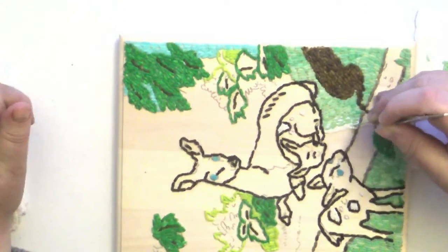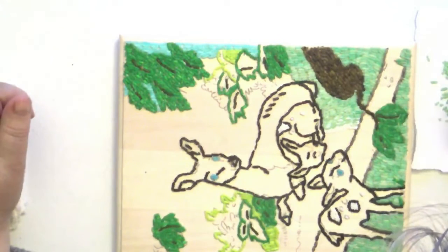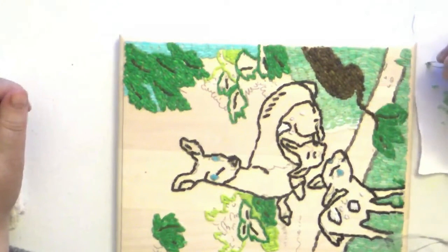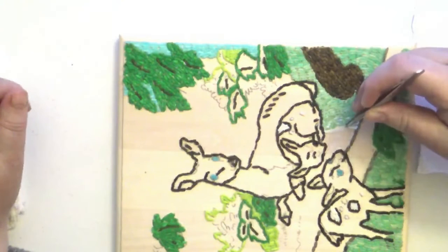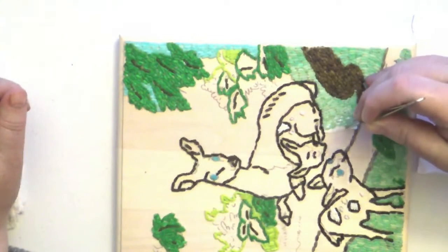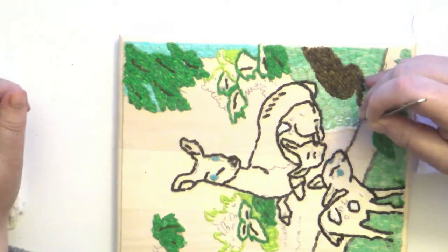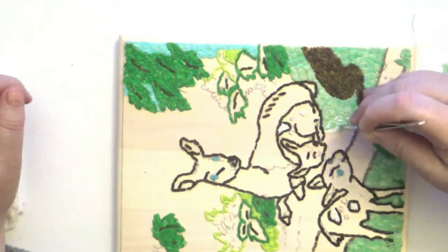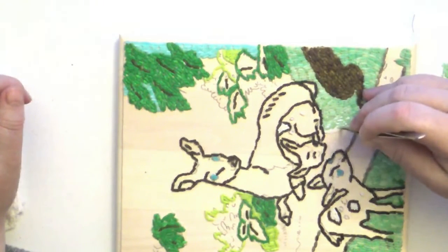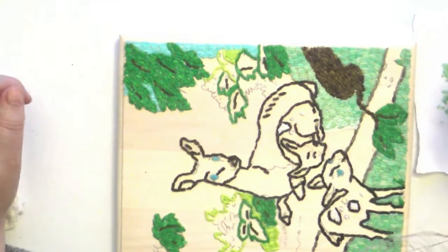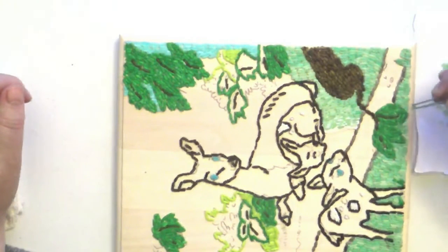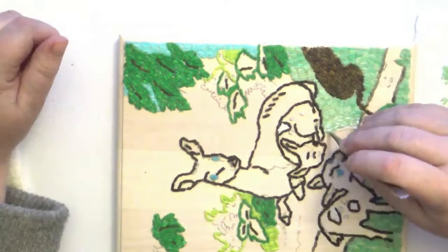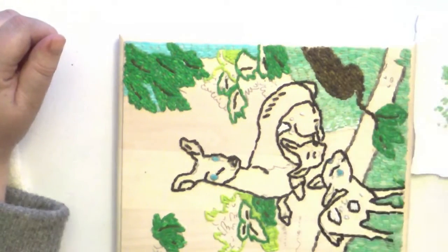When the rice starts moving around way too much for the section that you're working on, you can either switch sections of where you're working so you don't mess up the rice that's wet. Or you can switch boards. And that's how I go back and forth between the two. So there's your answer.